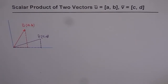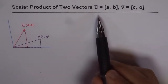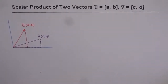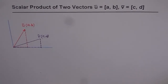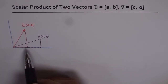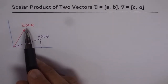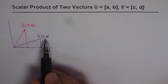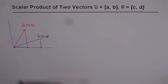Scalar product of two vectors U and V. In general, we have taken two vectors: vector U as AB and vector V as CD. In this video, we will explain the two formulas used for the scalar product of U and V. We have vector U shown as AB and vector V which is CD. These are non-zero vectors.